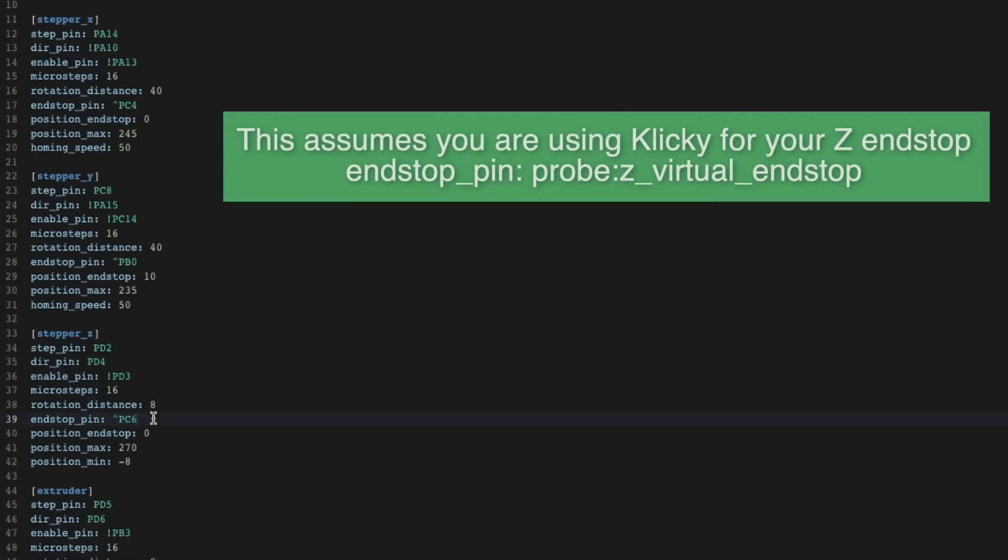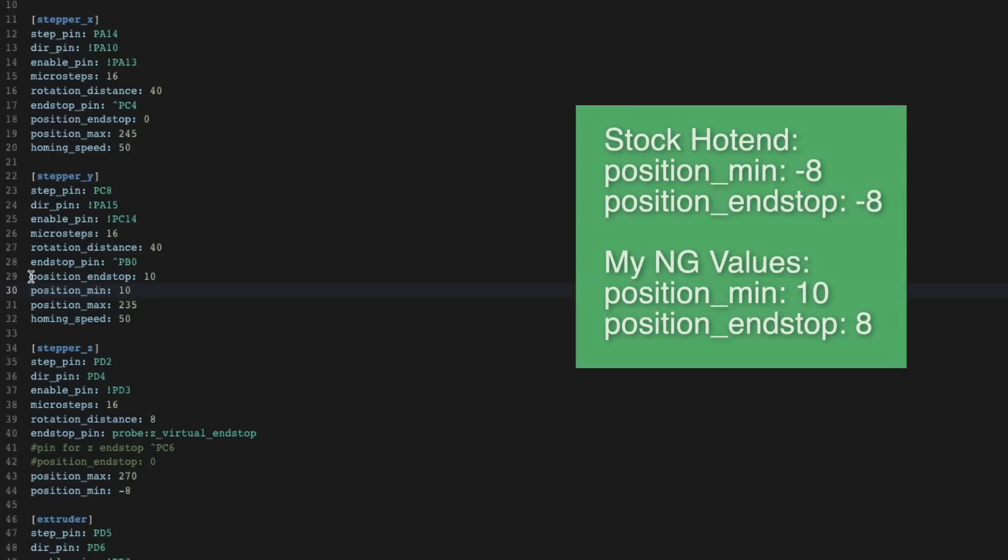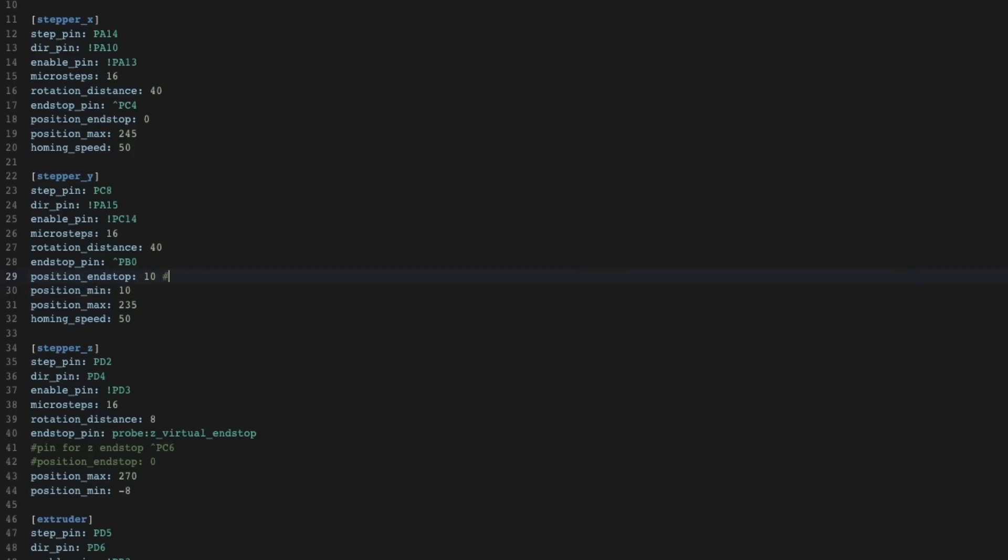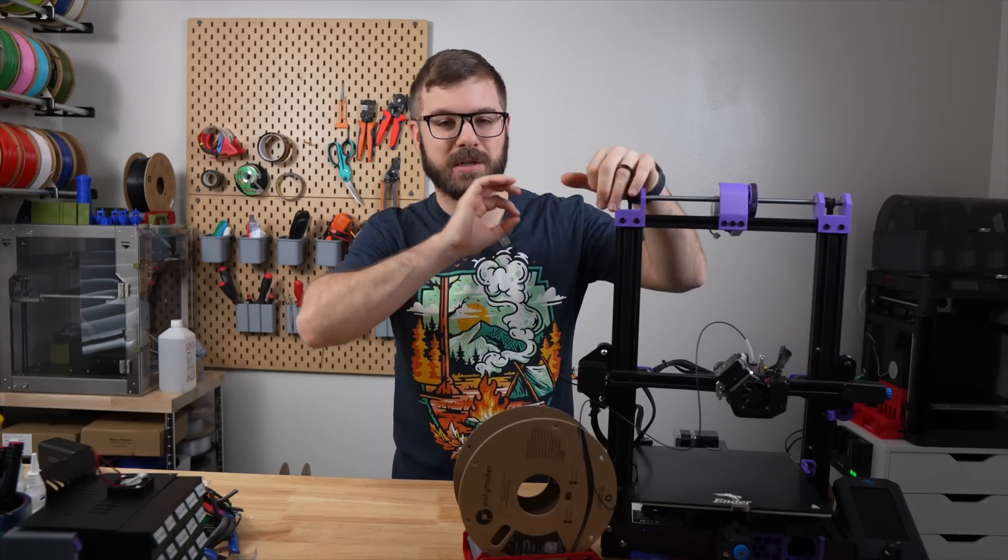The main things you'll need to do is open your printer.cfg and add include clackender.cfg. Under your stepper Z, write down your current pin ID before changing the endstop pin to the probe Z virtual endstop. Then comment out position endstop zero. Under stepper Y, if you're running a stock setup, change the position min to negative eight and position endstop to negative eight.